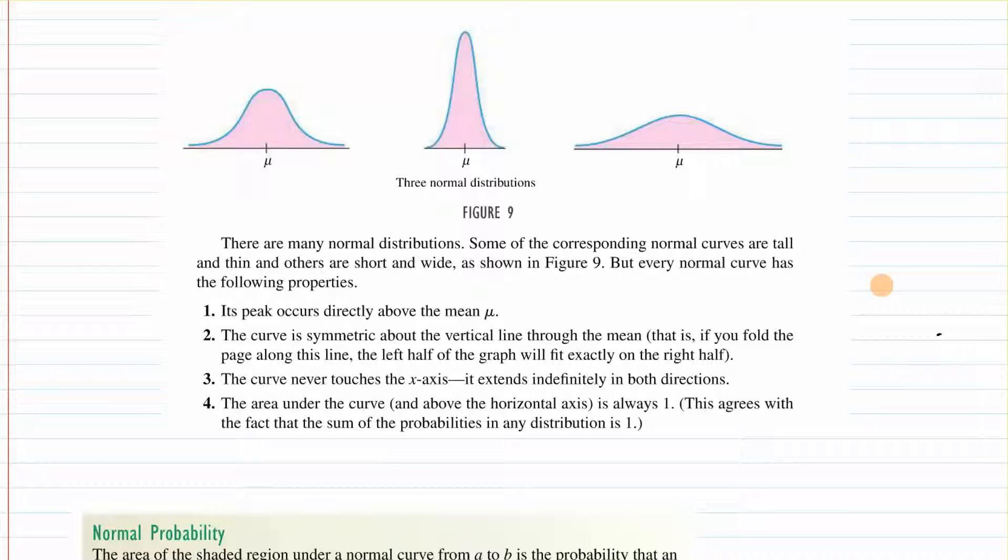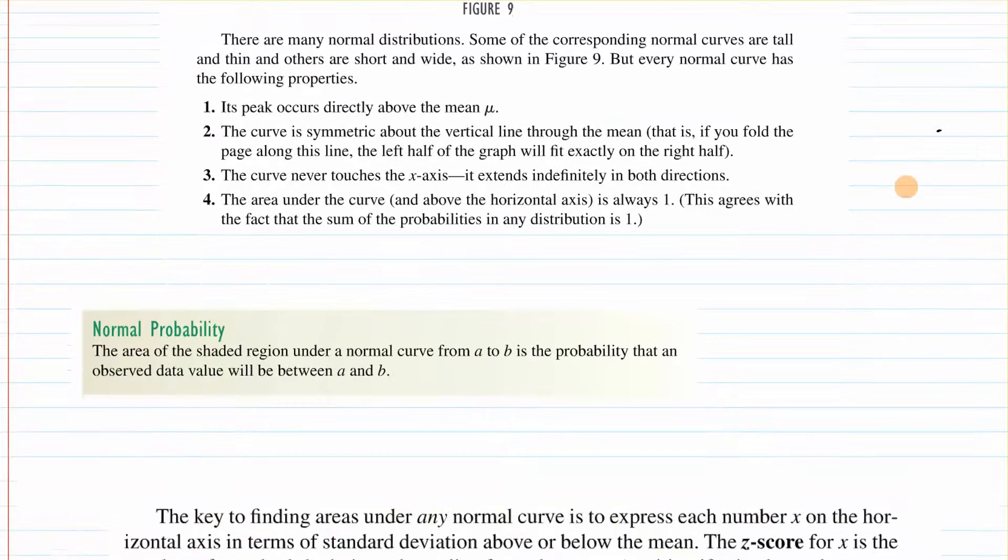The peak occurs directly above the mean. The curve is symmetric about the vertical line through the mean. That means if you folded the page along that line, the left would look exactly like the right. The curve never touches the x-axis. It'll get infinitely close, but it does not actually touch. The area under the curve and above the horizontal axis is always 1, which agrees with the fact that the sum of probabilities in any distribution is 1.